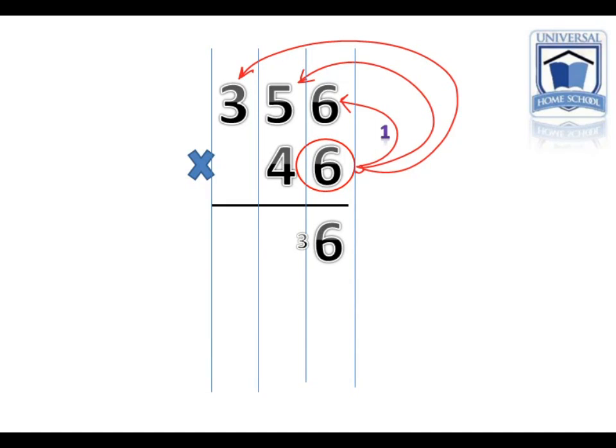Step 1. 6 times 6 equals 36. We put the 6 down in the column, and we carry the 3 to the next column, which we're going to add on in the next calculation.